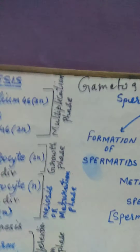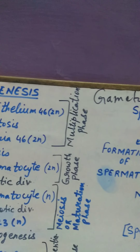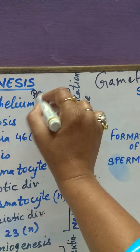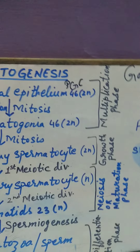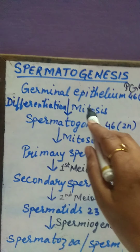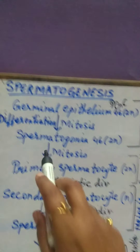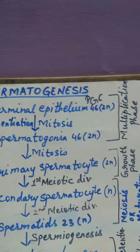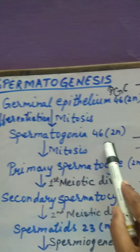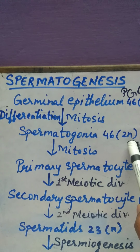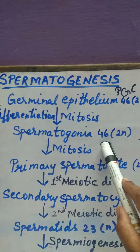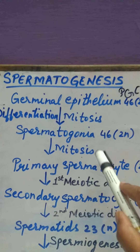During the multiplication phase, the primordial germ cells — abbreviated as PGC — divide continuously by mitosis to form diploid spermatogonia. Diploid spermatogonia means they contain 46 chromosomes.